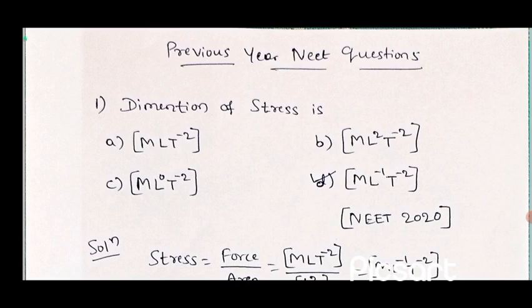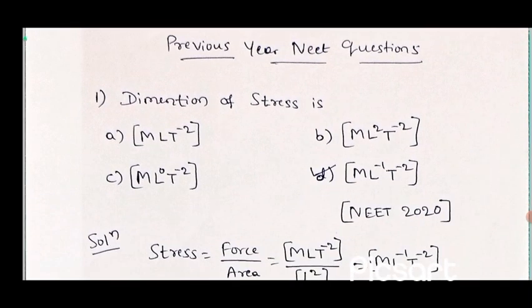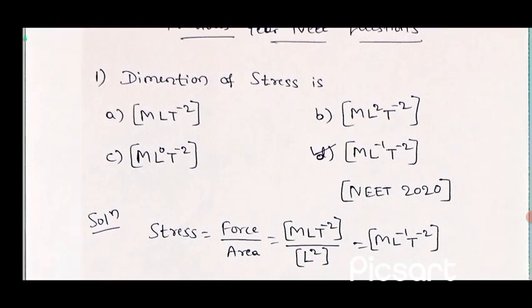As we know very well about the concept of stress. The first question is: the dimension of stress is — option A: ML T to the power minus 2, option B: ML square T to the power minus 2, option C: ML to the power 0 T to the power minus 2, and option D: ML to the power minus 1 T to the power minus 2. This question is asked in NEET 2020. Here they asked the dimension of stress. Stress is a physical quantity.